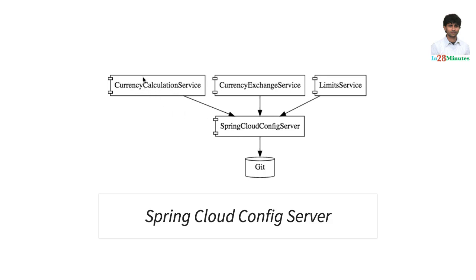Each of these microservices should only need to know what its name is and what its instance ID is. Once you have those two things, you should be able to talk to the config server and get your specific configuration back. This helps ensure that the operations team does not really need to configure anything on any of these microservices. All that the configuration team needs to focus on is configuring the Spring Cloud Config Server and putting things into the Git repository — simply updating the configuration files present there.